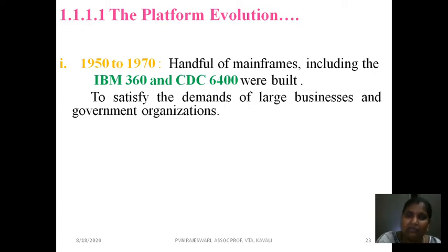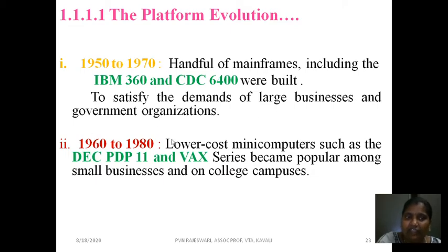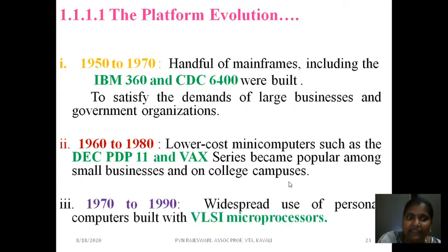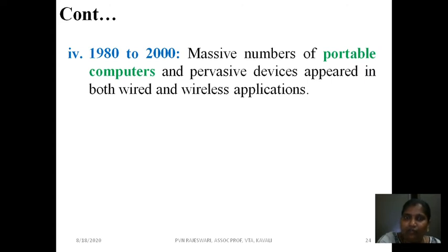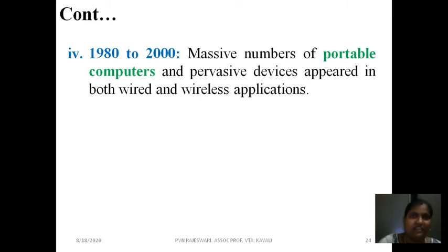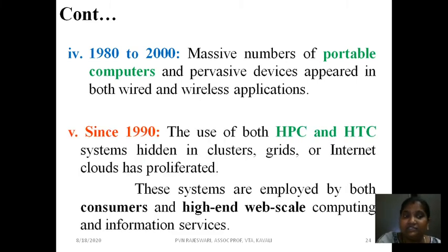IBM played a vital role in distributed computing evolution. IBM 360 and CDC 6400 came in terms of multiple connected systems with data sharing. From 1960 to 1980 we got DEC PDP-11 and VAX computers, useful for businesses and college campuses. From 1980 to 2000 we got portable computers — very small computers we can carry easily, unlike earlier when computers occupied entire rooms. Since 1990 we have HPC computers in HPC centers.